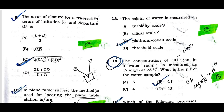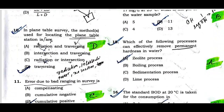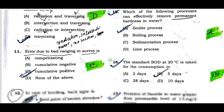Question number twelve: In a plane table survey, the method used for locating the plane table station — the correct method is traversing. Option D is the correct one.